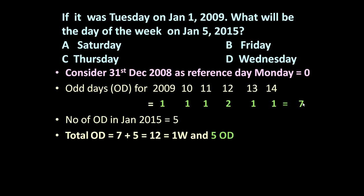So total number of odd days, 7 plus 5 is equal to 12. 12 odd days means 1 week and 5 extra days. These are 5 odd days.